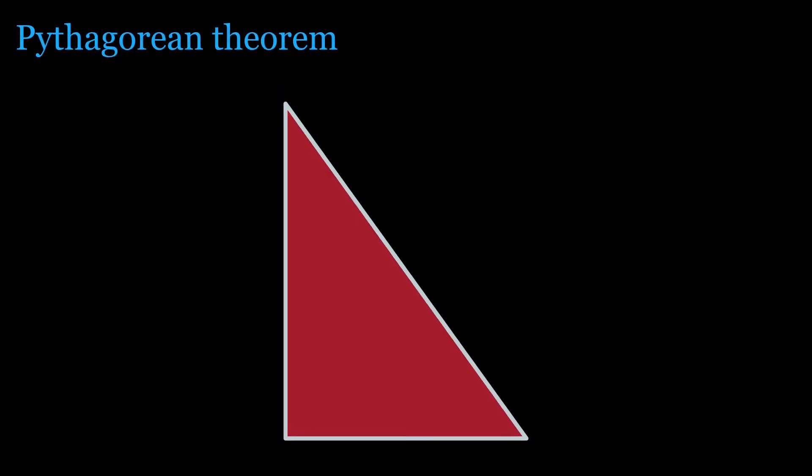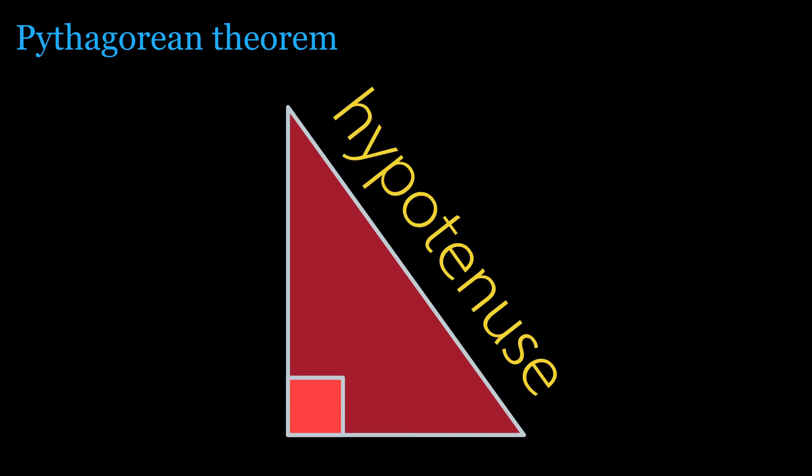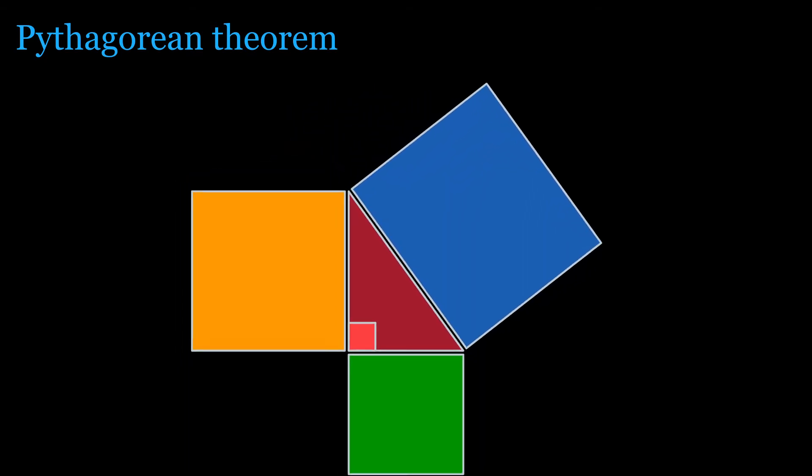Pythagorean theorem is a fundamental relation in Euclidean geometry among the three sides of a right triangle. It states that the area of the square whose side is the hypotenuse, the side opposite the right angle, is equal to the sum of the areas of the squares on the other two sides.